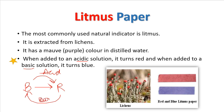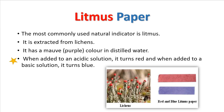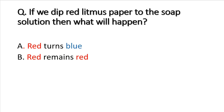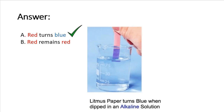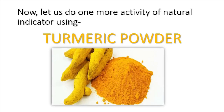If you get a chance, try this at your school. Now let us check what you have learned about litmus paper. Here is a simple question: if we dip red litmus paper into a soap solution, what will happen? The correct answer is that red turns blue, because soap solution is basic.